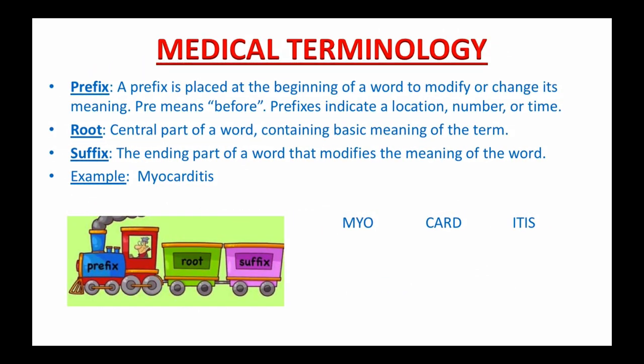Medical terminology. For those of you who are new to my channel, I want to go over this slide again. Medical terminology is a language used to describe the human body components, processes, illnesses, medical procedures, and pharmacology. Simply speaking, it is the vocabulary that medical professionals use to describe the body, what it does, and the treatment they prescribe. Medical terms are used in the field of medicine and clinical settings. Medical terminology is composed of a prefix, root word, and suffix.